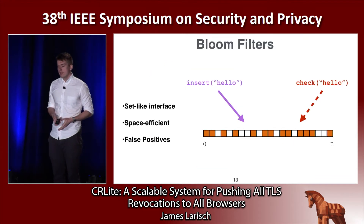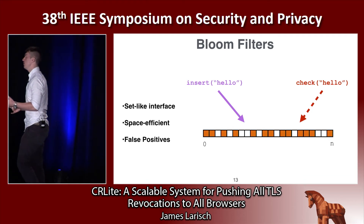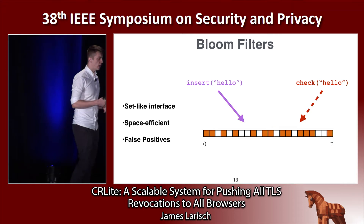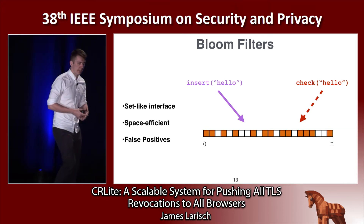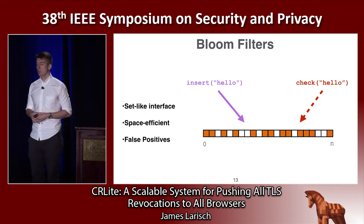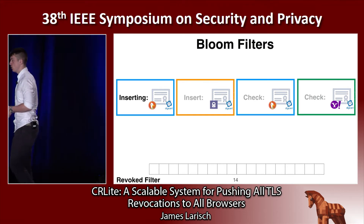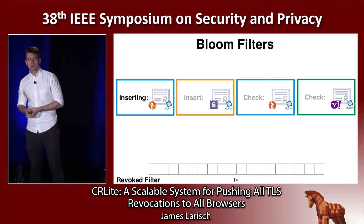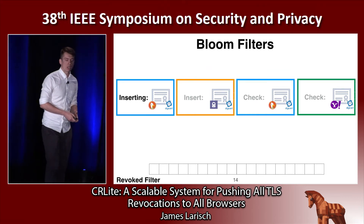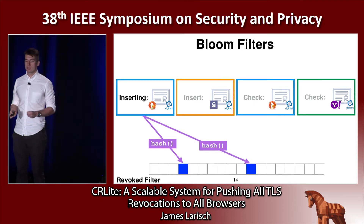We need to send a set of certificate identifiers efficiently, and bloom filters are a fantastic data structure for this. They're incredibly space efficient, implemented with bit arrays. For example, let's say DuckDuckGo's certificate is revoked, and k — the number of hash functions — is two. Inserting DuckDuckGo's certificate means flipping two bits in the revoked bloom filter from zero to one.